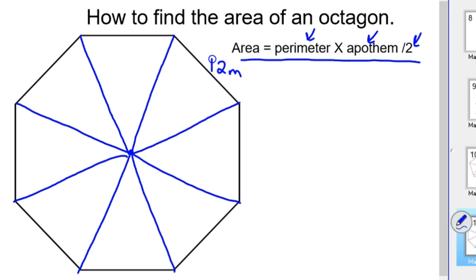And so each of these angles would be 360 divided by 8, which is equal to 45 degrees. So every angle around there is 45 degrees.